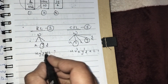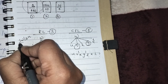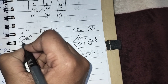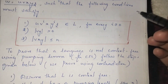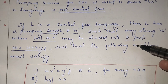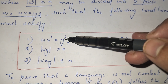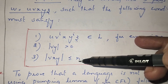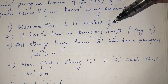In regular language we divide into three parts; in context-free language we divide into five parts. In both cases, the length of the string w must be greater than or equal to the pumping length n. Additionally, in context-free languages, v and y are the pumping variables so |vy| must be greater than zero, and |vxy| must be less than or equal to n.